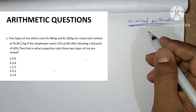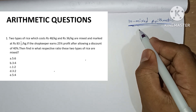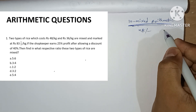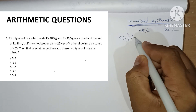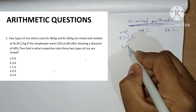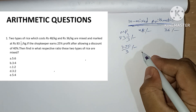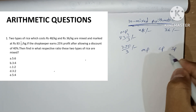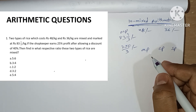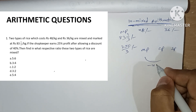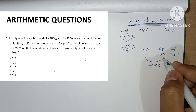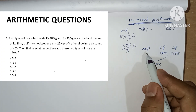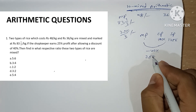The first question: two types of prices which cost 48 rupees per case and 36 rupees per case are mixed and marketed at 83 and one-third rupees per case as market price, which is 250 divided by 3 rupees. We have market price, cost price, and selling price. The shopkeeper earns 25 percent profit after allowing a 40 percent discount.